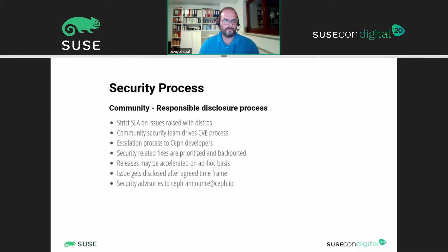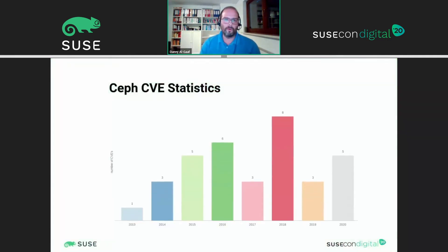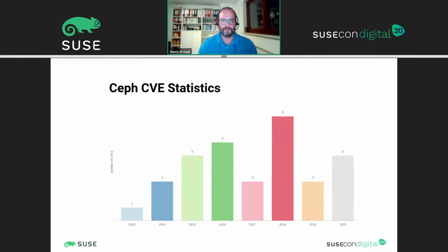Security advisories go to ceph-announce@ceph.io — you should subscribe to that if you want to monitor it. Looking at the Ceph CVEs from the last few years: the number of CVEs has increased, which is basically caused by more usage of Ceph and very fast-paced development. The community is getting better at finding issues and getting more reports from the outside as the community grows. This year alone there have been five CVEs so far, and the community is really handling these processes well.